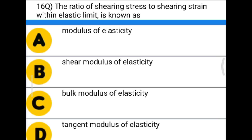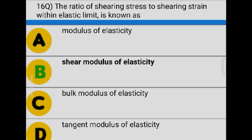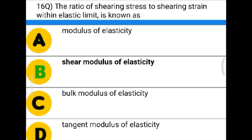Next question: The ratio of shearing stress to shearing strain within the elastic limit is known as — option A: modulus of elasticity, option B: shear modulus of elasticity, option C: bulk modulus of elasticity, option D: tangent modulus of elasticity. The correct answer is option B: shear modulus of elasticity.